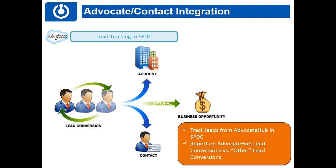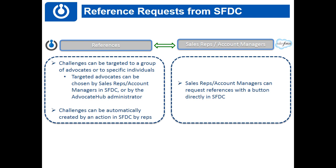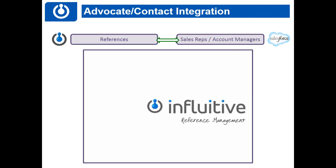The last thing we're going to talk about is references. There's a super simple way to get references, and it's a really valuable element of the Advocate Hub — it allows you to invite your sales people to request a reference from within a Salesforce opportunity. They have access to your Advocate Hub database of individuals and can say 'I need a reference for this opportunity, who works at this company and has these qualities.' That creates an unpublished challenge in your Advocate Hub.